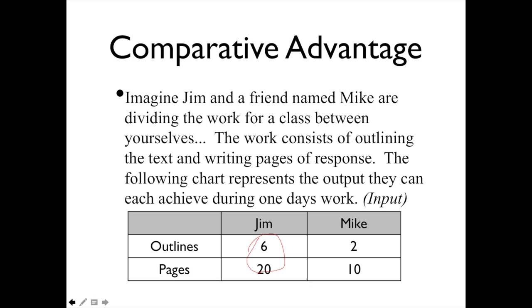According to Adam Smith, Jim could never possibly benefit from trading with Mike. But David Ricardo, in the theory of comparative advantage, looks at it a little differently.